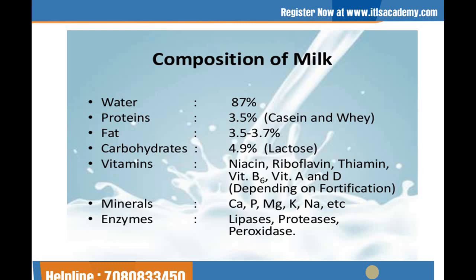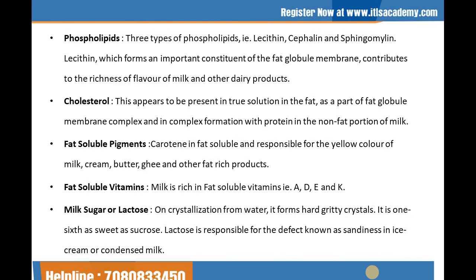Certain minerals are also found in milk such as calcium, potassium, magnesium, phosphorus, sodium, etc. Certain enzymes are also found: lipases, proteases, and peroxidases. The main other composition includes phospholipids. There are three types of phospholipids: lecithin, cephalin, and sphingomyelin. Lecithin forms an important constituent of the fat globule membrane and contributes to the richness of flavor of milk and other dairy products. It is highly sensitive to oxidative changes, giving rise to oxidized metallic flavor. Phospholipids are excellent emulsifying agents and serve to stabilize the milk fat emulsion.